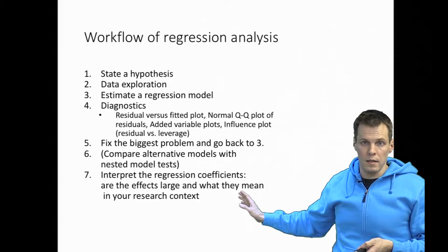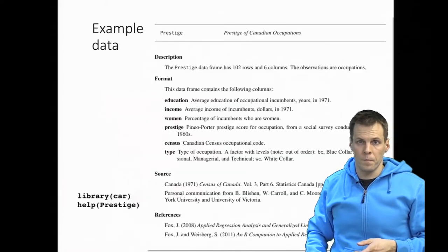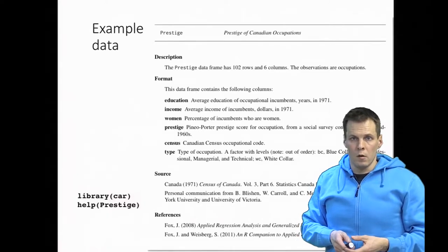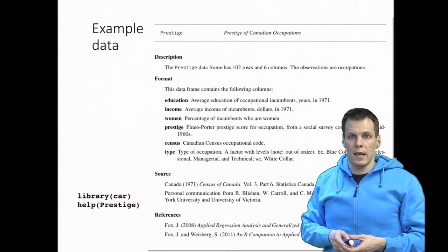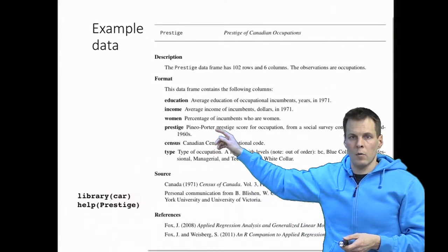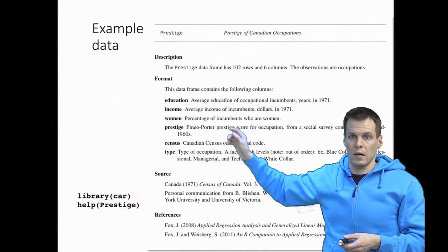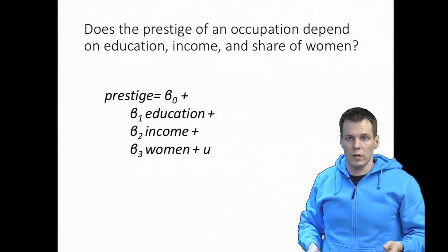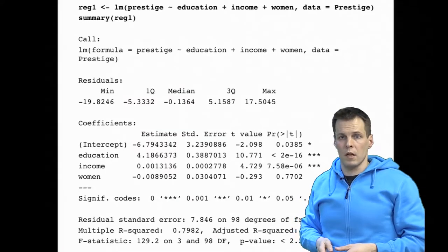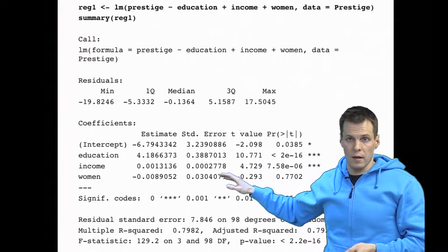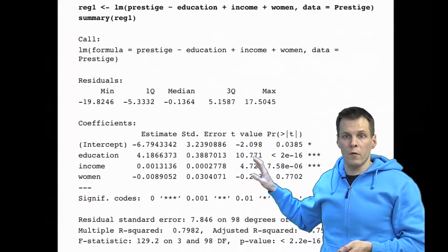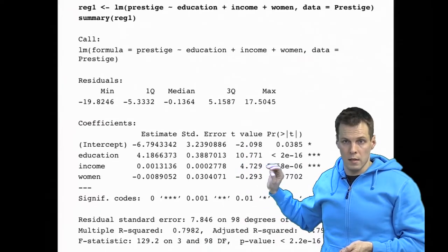I don't just state that the regression coefficient is 0.02 — I tell what it means in my particular research context. And that is the hard part in regression analysis. To demonstrate the regression analysis diagnostics, we need some data. We're going to be using the prestige dataset, and our dependent variable is prestige. We're going to be using education, income, and share of women as independent variables. We have gone through these estimates before in a previous video, so I will not explain them in detail. Instead, I'm going to focus on assumptions checking.